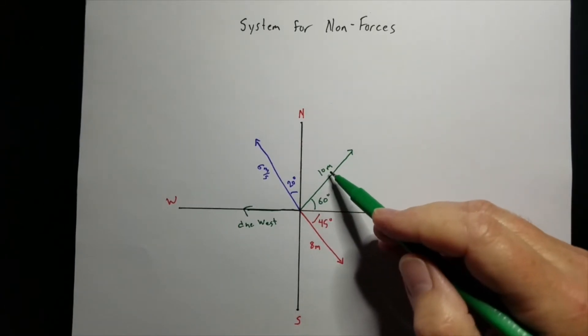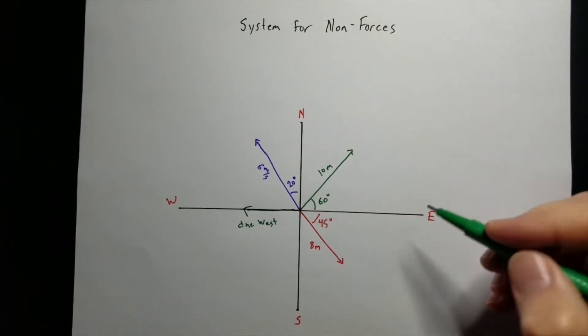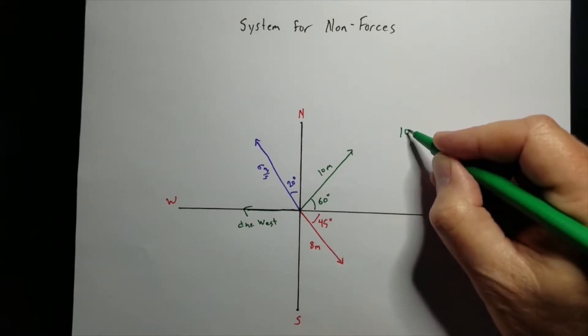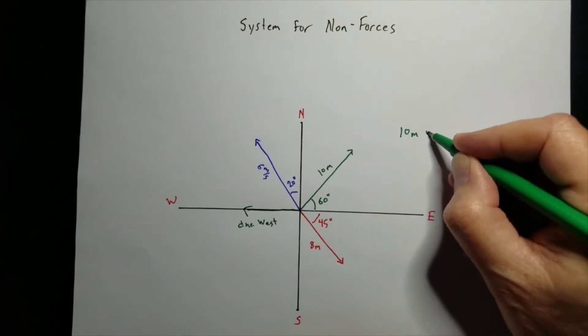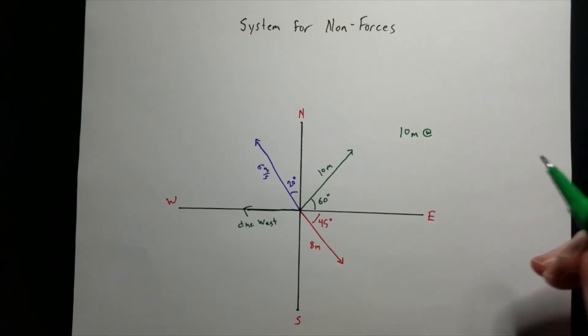It's a displacement, 10 meters, it gives us a direction, but what are we going to name it? It's going to be 10 meters at, and then we've got to give it a name.